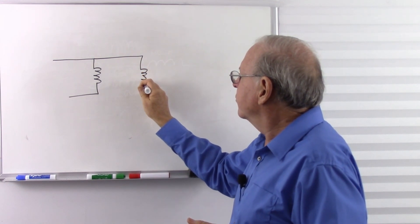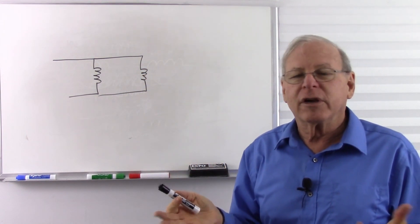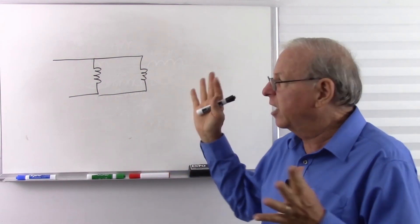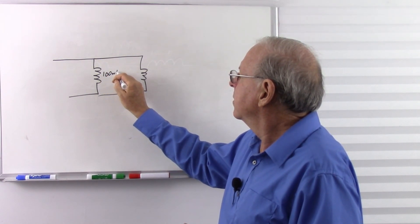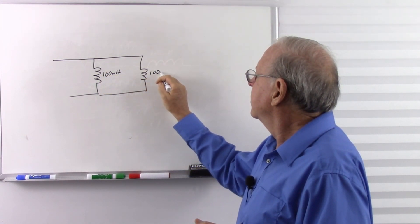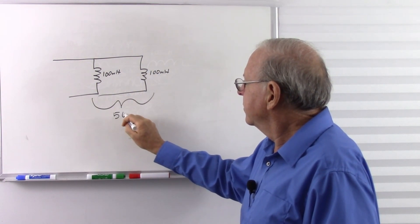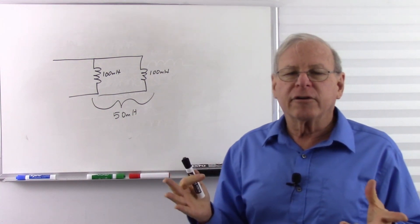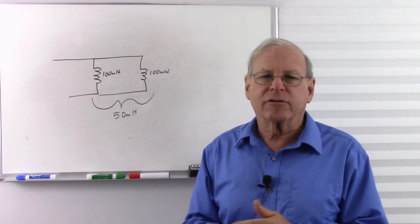So remember that capacitors, if we put capacitors in parallel, it was like resistors in series. If we put capacitors in series, it was like resistors in parallel. But inductors are just like resistors. So inductors in parallel, we have less inductance. So inductors in series are like resistors in series. Inductors in parallel are like resistors in parallel.